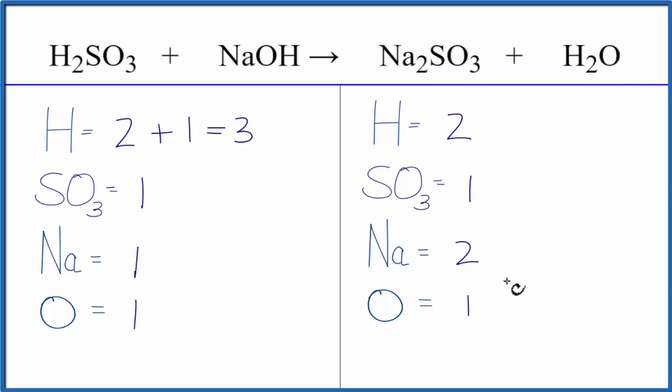Let's start by balancing the sodiums and see what that does. If we put a 2 in front of the sodium hydroxide, that would mean we'd have 1 times 2, that would give us two sodiums, those would be balanced. Oxygens, 1 times the 2, 2 oxygens. And then hydrogens, let's update those again.